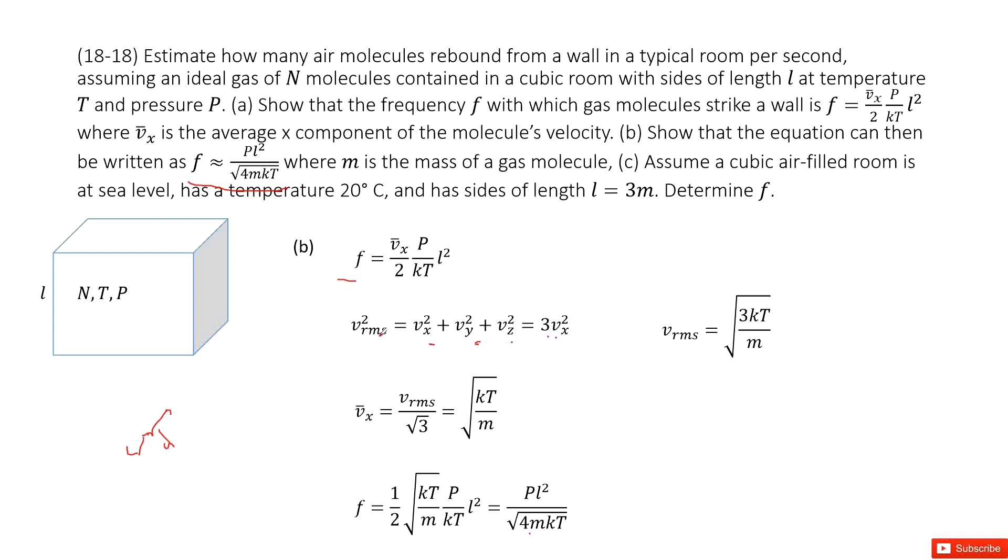We can write v rms square equal to vx square plus vy square plus vz square. Because vx, vy, vz are equal, we can write it as 3 times vx square. We need to introduce the rms speed as the square root 3kT divided by m. vx equals v rms divided by square root 3. v rms equals square root 3kT divided by mass m. We input vx into this function and simplify to get the answer.